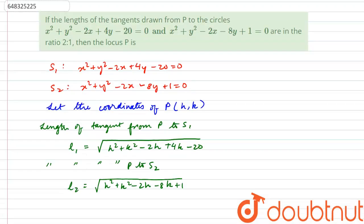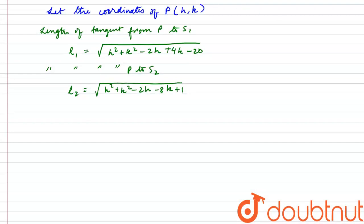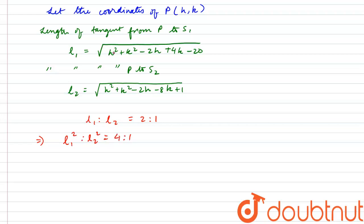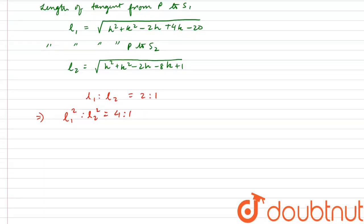It is given that l1 : l2 = 2 : 1. We can square both sides so that l1² : l2² = 4 : 1. This removes the square roots and lets us substitute the expressions directly.